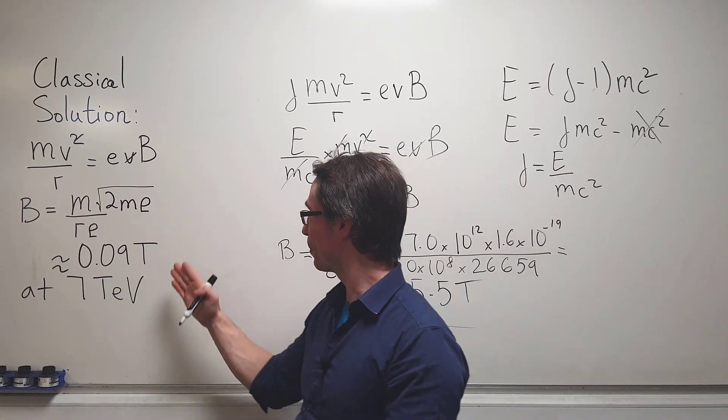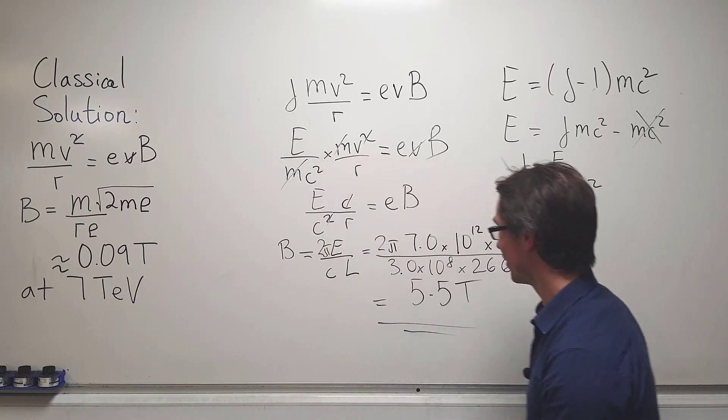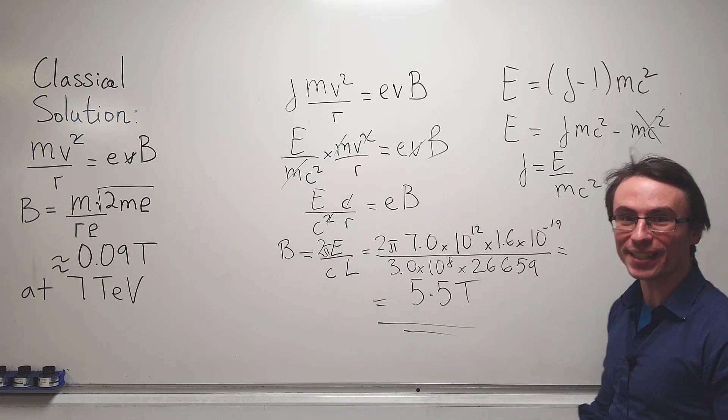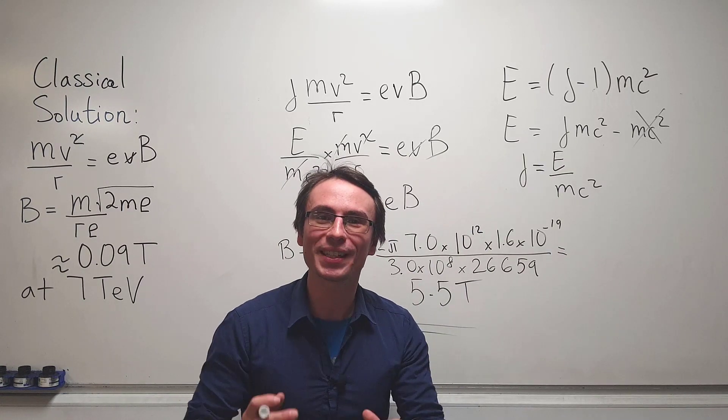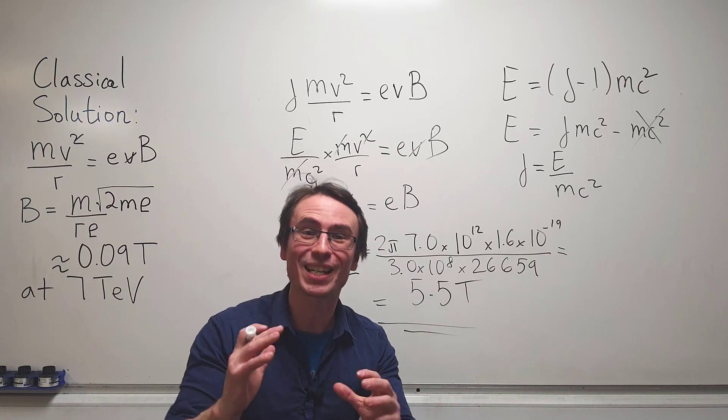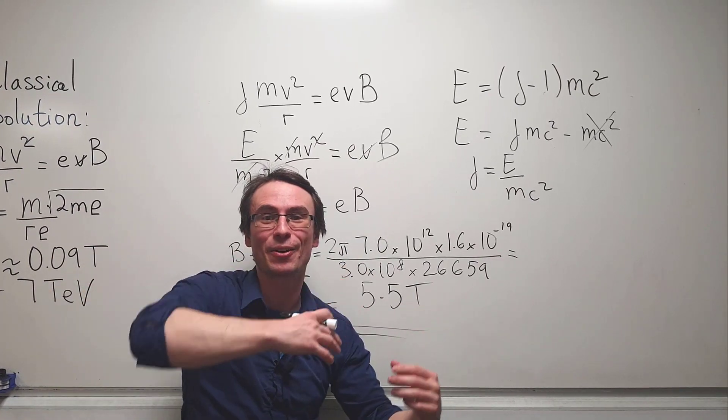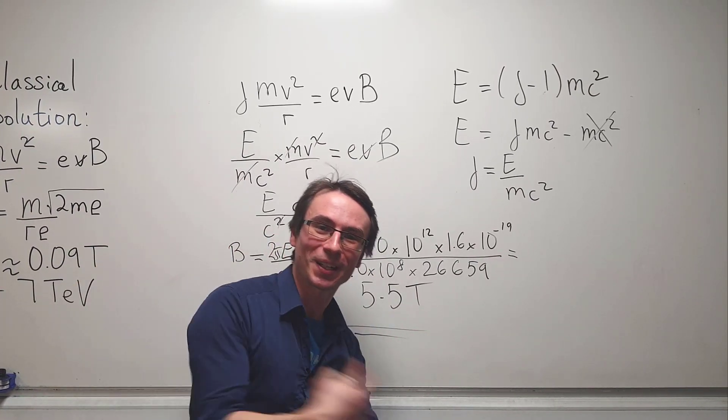And just look at the difference between the classical result and the relativistic result. If you have enjoyed this physics Olympiad problem, you're really going to enjoy this physics derivation right over here, so click right over here.